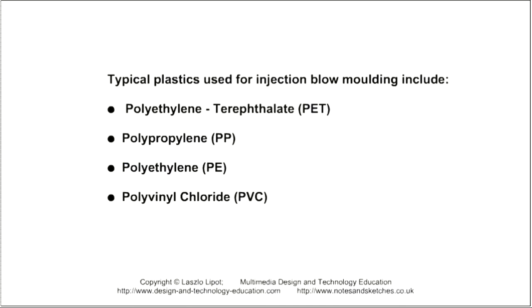Typical polymers used for injection blow moulding include polyethylene terephthalate (PET), polypropylene (PP), polyethylene (PE), and polyvinyl chloride (PVC).